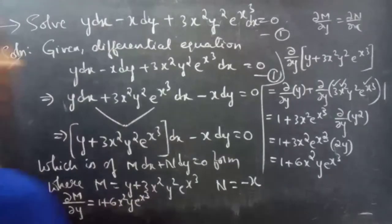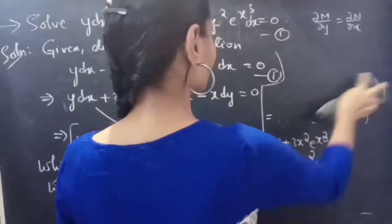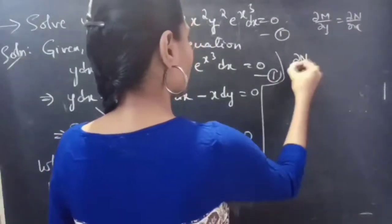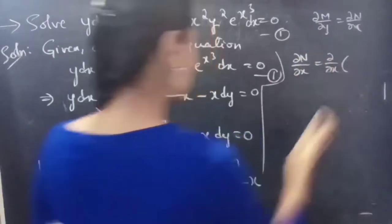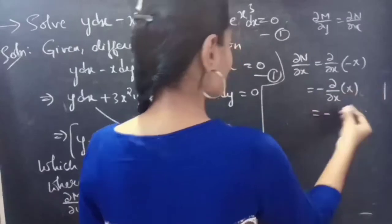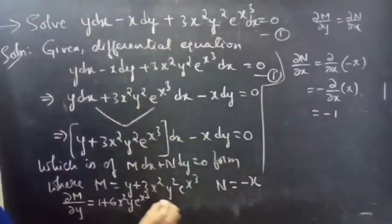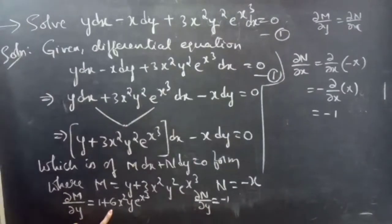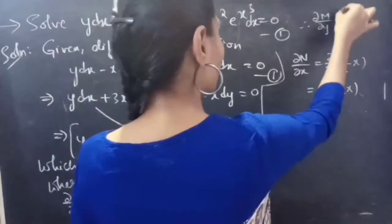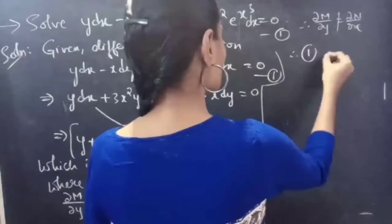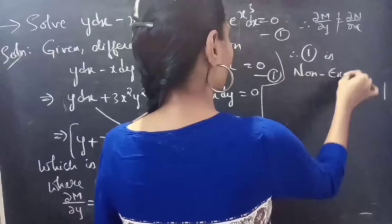Now finding the partial derivative of N with respect to x: for N = minus x, ∂N/∂x = minus 1. Therefore ∂M/∂y is not equal to ∂N/∂x, so equation 1 is non-exact.